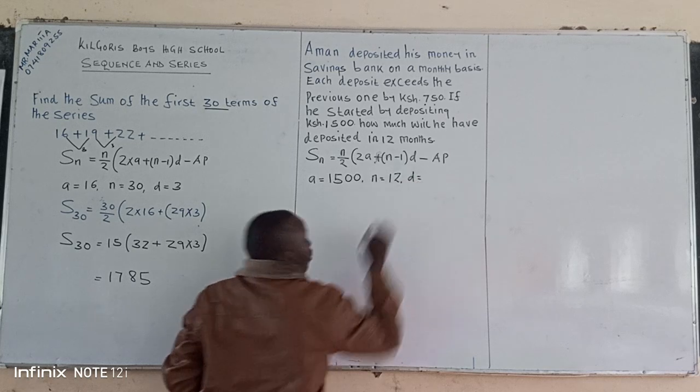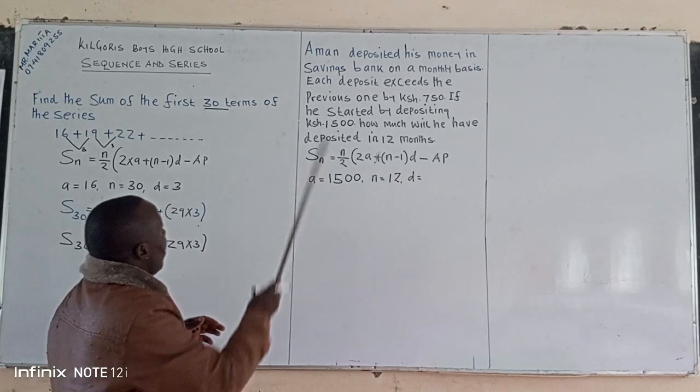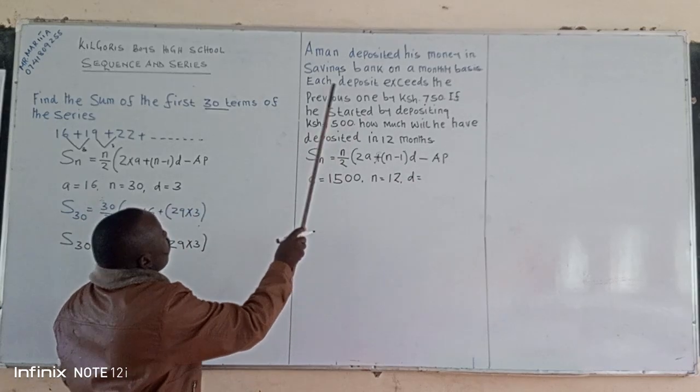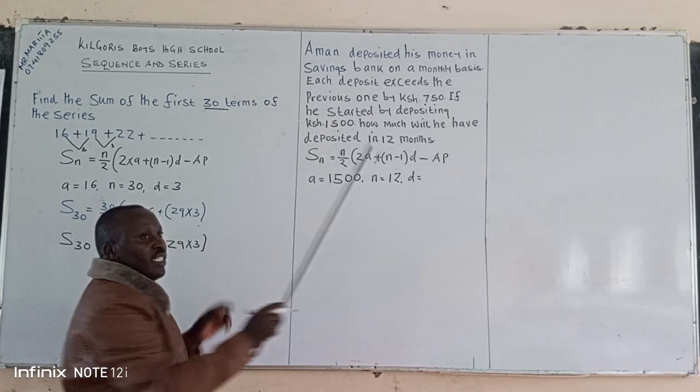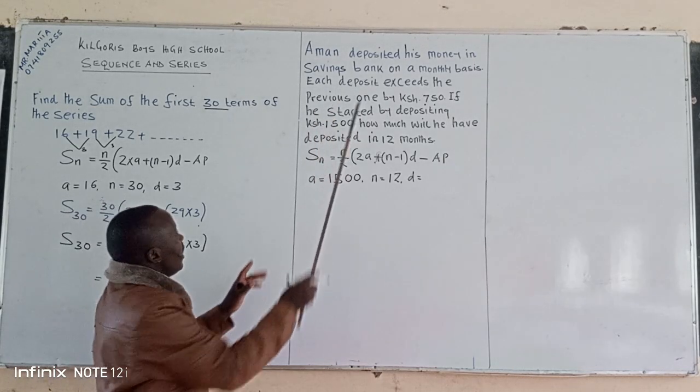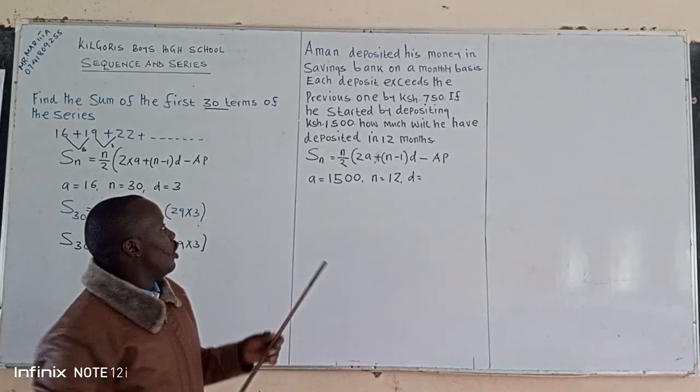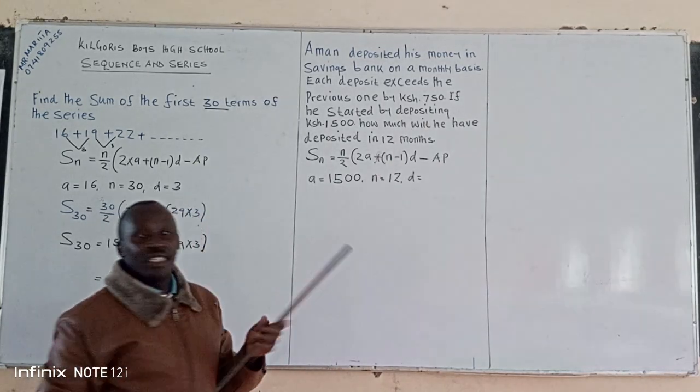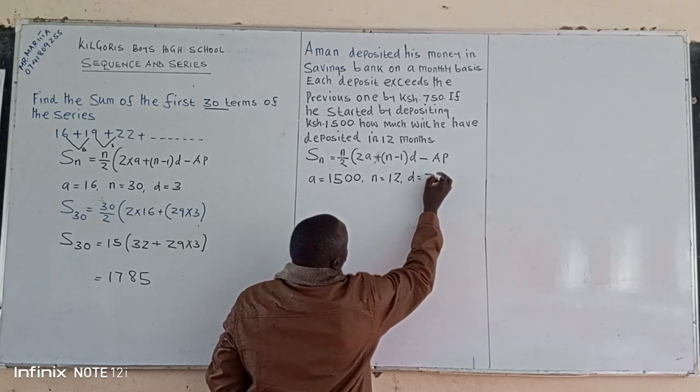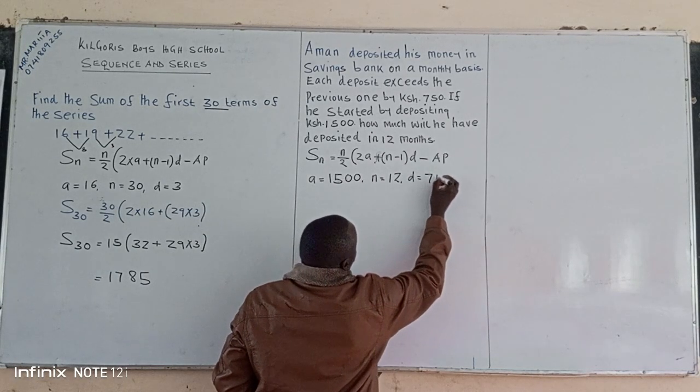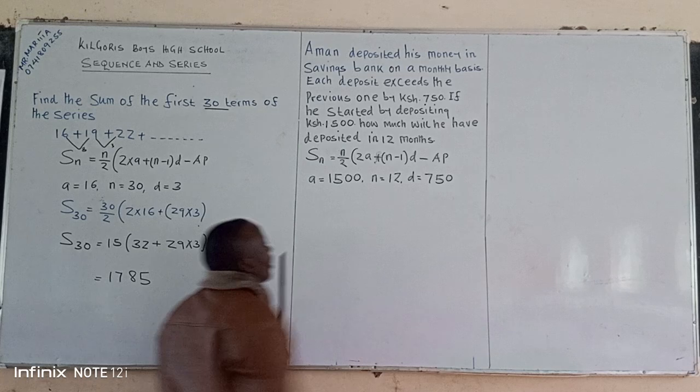Then we have the common difference is equivalent to what. So from here, the previous one, we have been told that each deposit exceeds the previous one by 750. So we can have this 750 as our common difference.